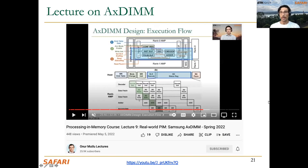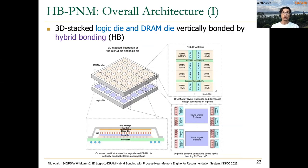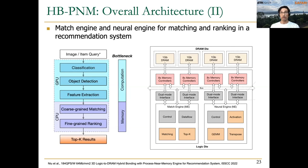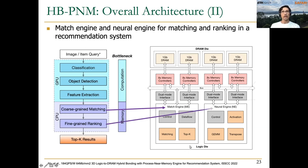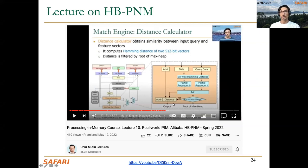To learn more about the AXTEAM architecture, I recommend lecture nine, which also includes a short introduction to recommendation systems. Also for recommendation systems is the HBPNM announced in 2022 at the ISSCC conference by Alibaba — a 3D stack logic die and DRAM vertically bonded using hybrid bonding. The HBPNM is designed to accelerate the most important memory-bound operations in recommendation systems, such as coarse-screen matching executed on the match engine and fine-grained ranking running on the neural engine. This is covered in lecture ten.